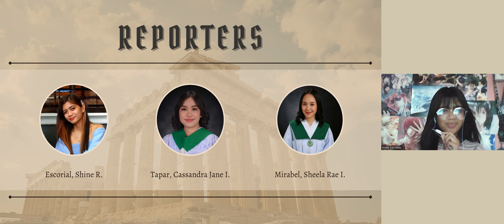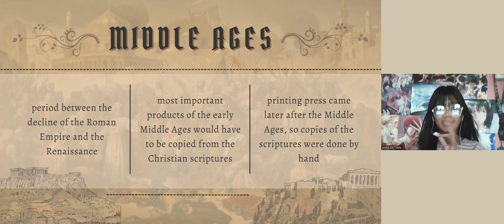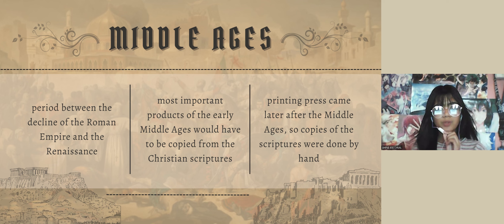The Middle Ages is a period between the decline of the Roman Empire and the Renaissance period. The Christian scriptures are one of its most important products. But because the printing press was made later after this age, copies of the scriptures were done by hand.